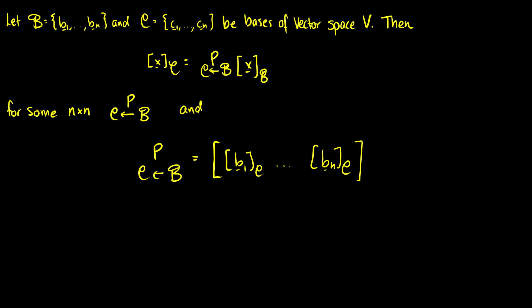Welcome back to linear algebra. Today we'll introduce the concept of the change of basis matrix, and this is not to the standard basis. So let B equal b1 through bn and C equal c1 through cn. They're both going to be distinct bases of some vector space V.